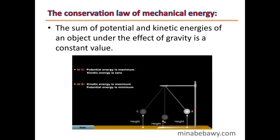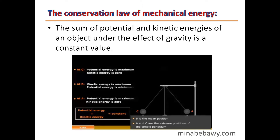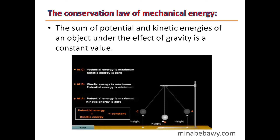If the pendulum continues its motion to A, it reaches again the maximum height and its velocity becomes zero. So at A, its potential energy is maximum and its kinetic energy is zero. At any point, for the same object under the effect of gravity, potential energy plus kinetic energy is always constant. This is what we call the Conservation Law of Mechanical Energy.